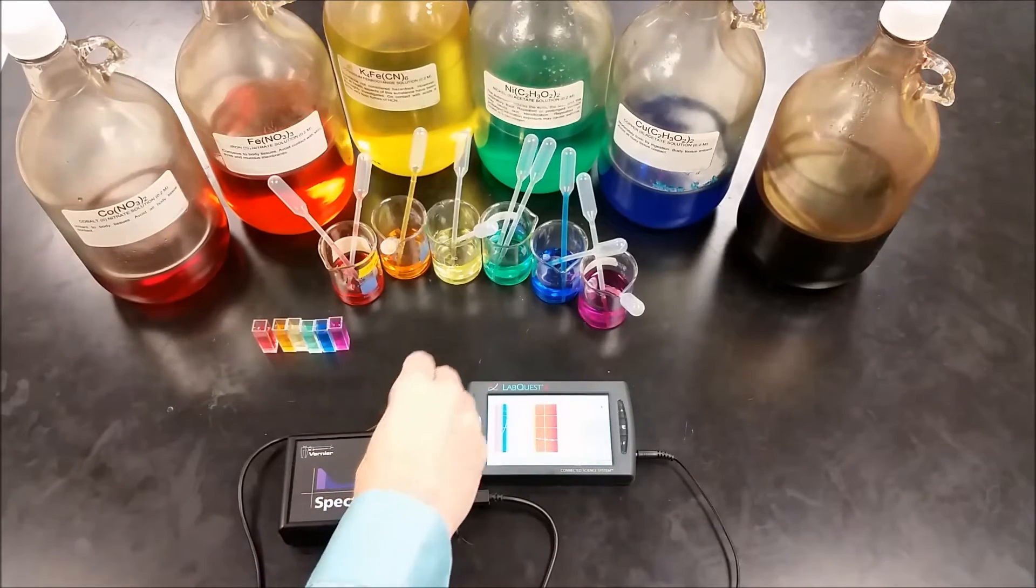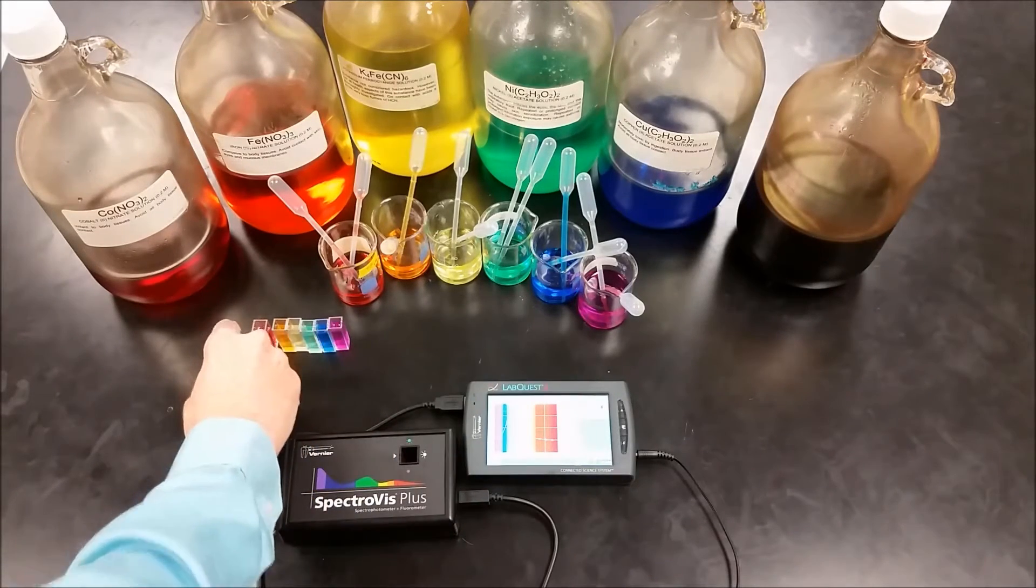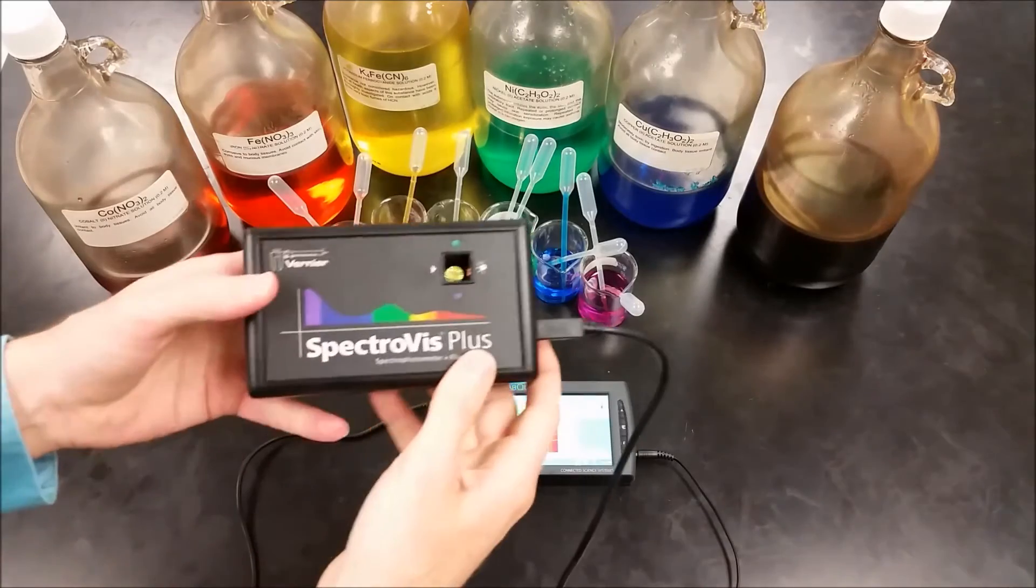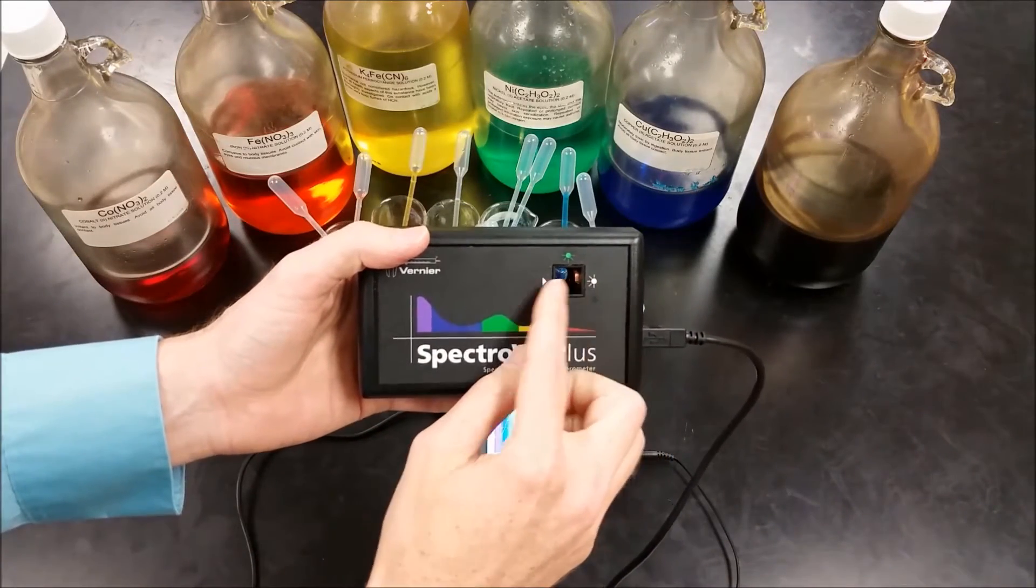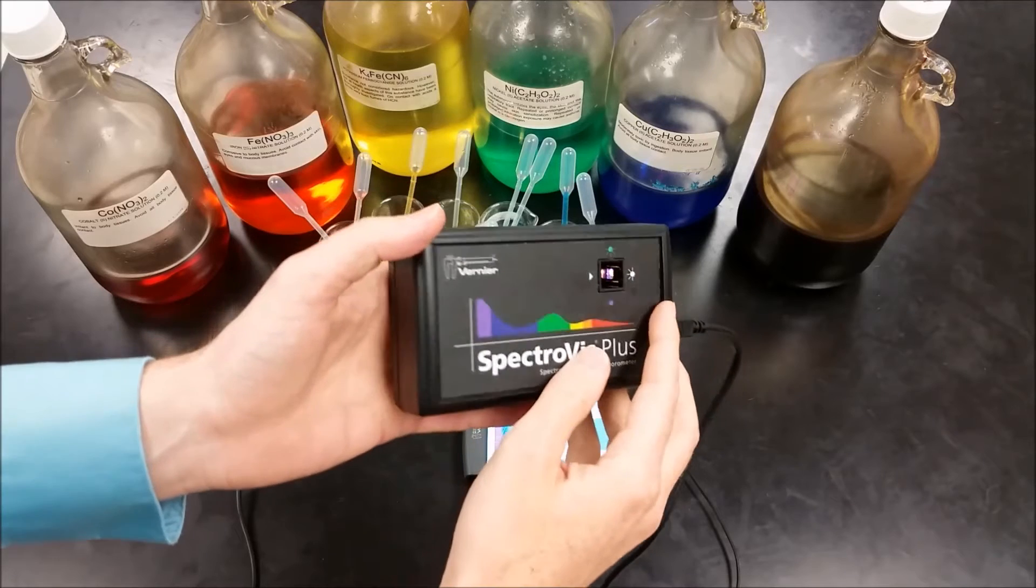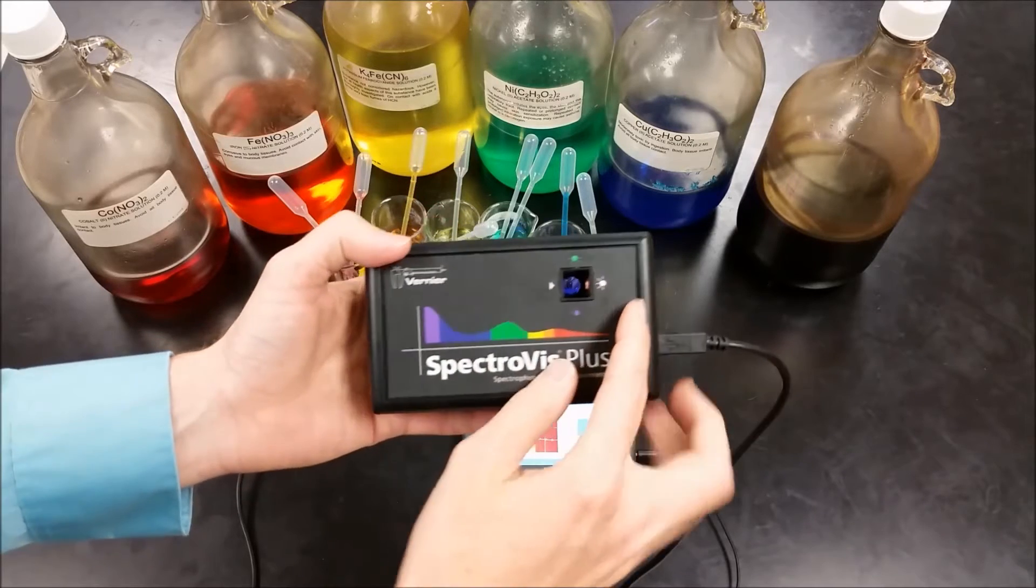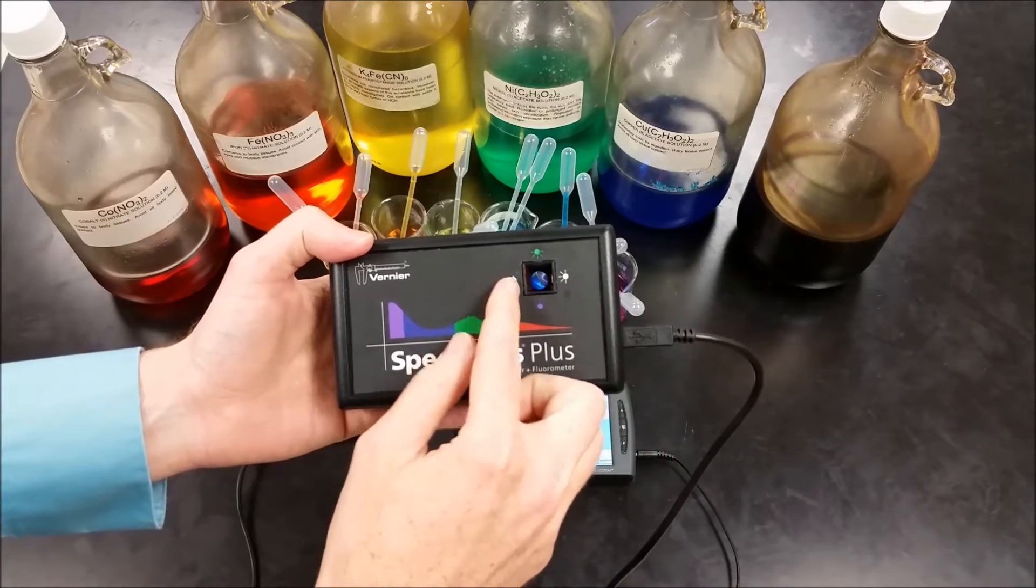and I'm going to analyze them using a spectrophotometer. The way that this spectrophotometer works - this is a SpectraViz Plus from Vernier - is a white light is shown through your sample. If I rotate this, you can see the white light coming out of here, and that white light goes through whatever it's passing through,